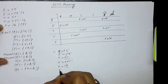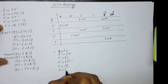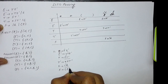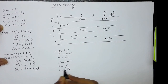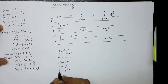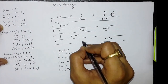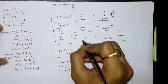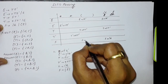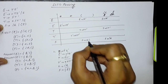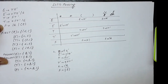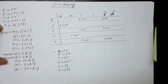The next production is F → (E). The first of the right-hand side is opening parenthesis. So F → (E) will be written in the F row under the opening parenthesis column. These are all the productions which do not contain epsilon.